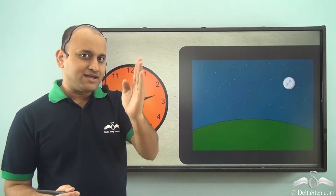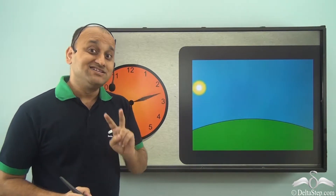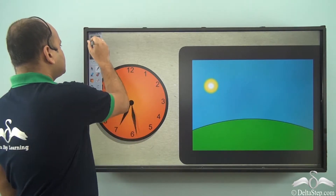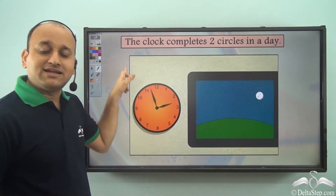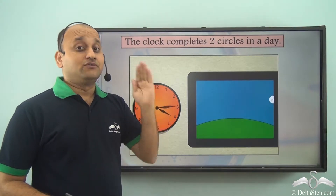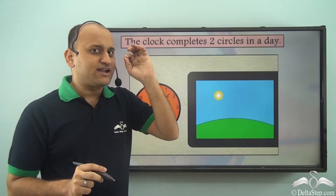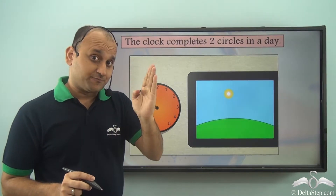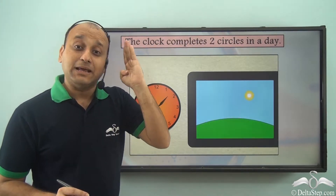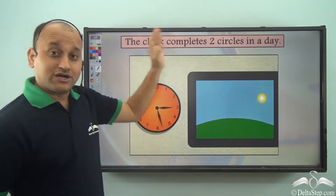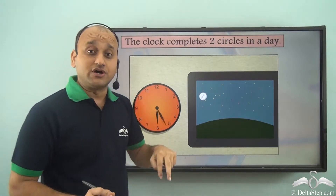So what did you see? From midnight to midnight, how many circles did the clock complete? It completed two circles. The clock completes two circles in a day — from midnight to midnight. It started with 12 midnight, moved forward, and exactly at noon it reached 12 again — that was the first circle. From 12 noon it started the second circle and completed again at midnight. Two circles in one day.